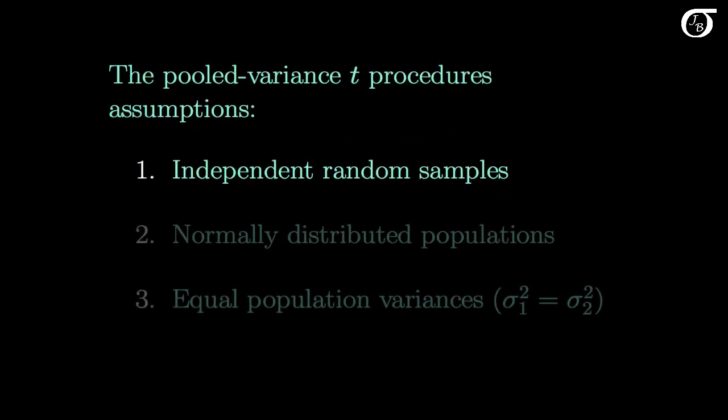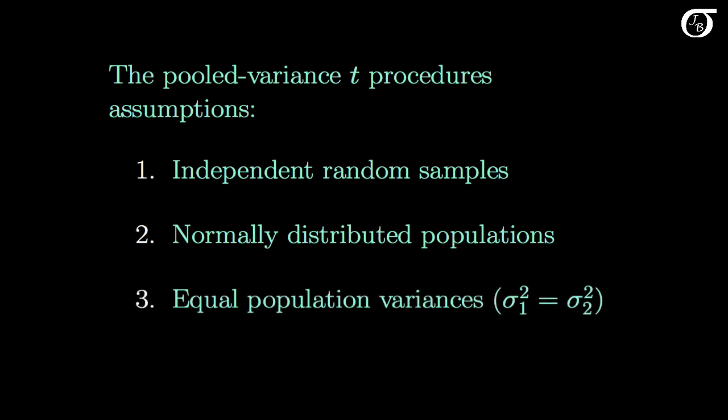Recall the pooled variance t procedure assumptions — the conditions required for these procedures to be valid. We first needed independent random samples from the populations of interest, or the method works for randomized experiments as well. We also needed normally distributed populations, although this is not very important if we have large sample sizes. And we also required equal population variances.